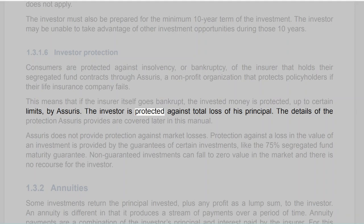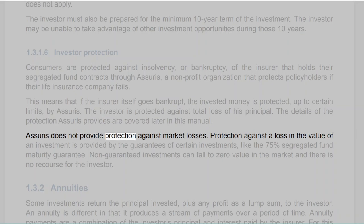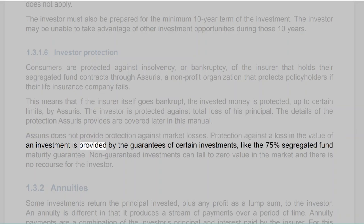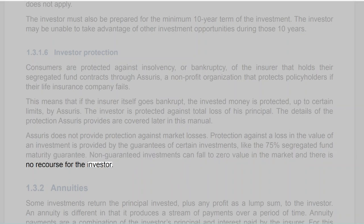The investor is protected against total loss of his principal. Assuris does not provide protection against market losses — protection against a loss in the value of an investment is provided by the guarantees of certain investments, like the 75% segregated fund maturity guarantee. Non-guaranteed investments can fall to zero value in the market, and there is no recourse for the investor.